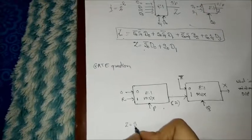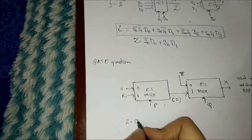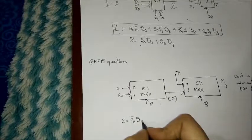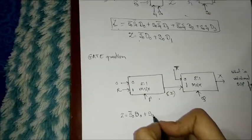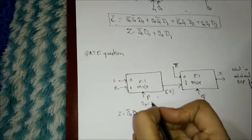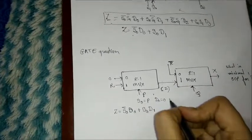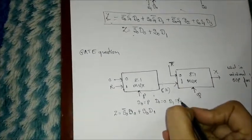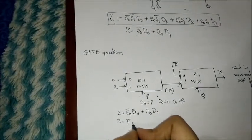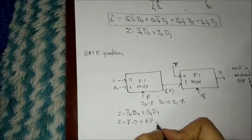So the output Z equals, as it is a 2-to-1 MUX, we have S0 bar times D0 plus S0 times D1. Here, S0 is nothing but P, which is the select line. And D0 is 0, and D1 is R. So our characteristic equation becomes P bar times 0 plus R times P, which equals RP.